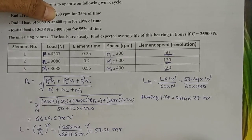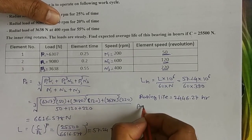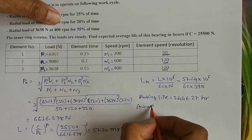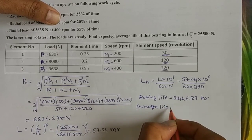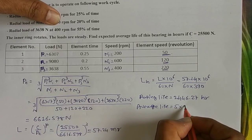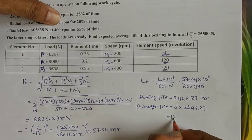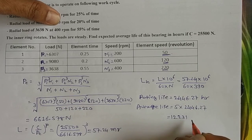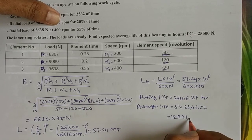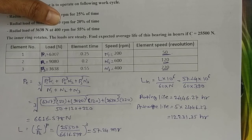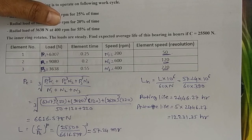The average life is equal to 5 × 2446.27 = 12,231.35 hours. This is our answer. I hope you can understand how to find the life of the bearing and how to solve different examples of bearing design. Thank you very much friends.